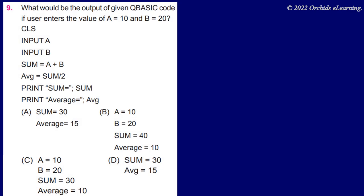What would be the output of the given QBASIC code if user enters the value of A equals 10 and B equals 20? Look at the code carefully. A, Sum equals 30, Average equals 15